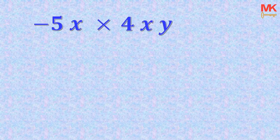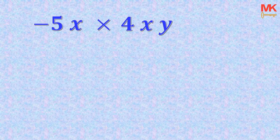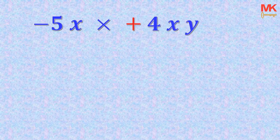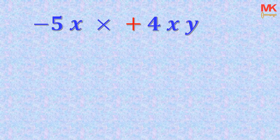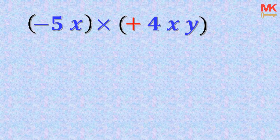Suppose we have negative 5x multiplying 4xy. The first thing we're going to do is make sure each term has its operation. The first term, negative 5x, has a negative operation. It looks like the second term doesn't have an operation — that is not true. In mathematics, whenever a number or letter is written without any operation, by default it has an invisible positive operation at the front. So we shift 4xy and introduce that invisible positive operation. We then group the first term and the second term. Operations multiply operations, numbers multiply numbers, and the same letters multiply the same letters.